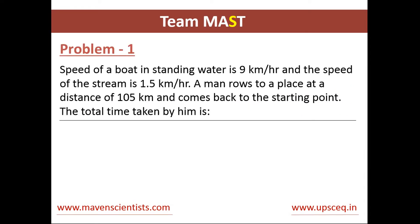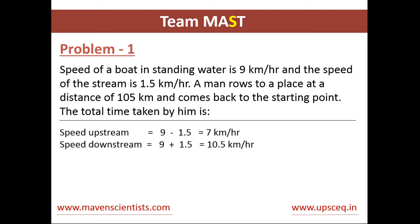Let's see the first problem. The speed of the boat in standing water is 9 km per hour and the speed of the stream is 1.5 km per hour. A man rowed to a place at a distance of 105 km and comes back to the starting point. We have to find the total time taken by him. The speed upstream is the speed of the boat in standing water minus the speed of the stream.